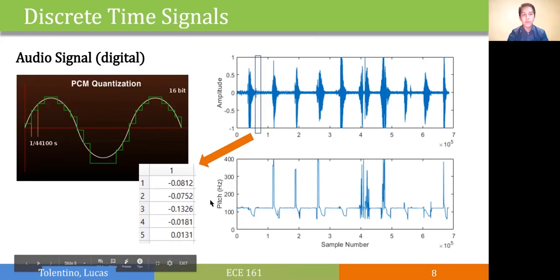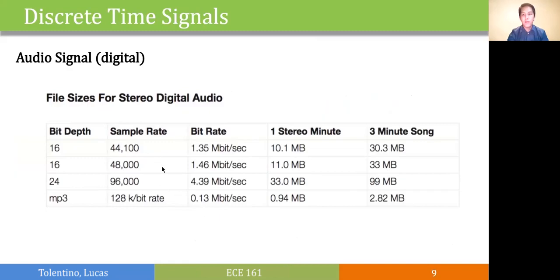Now, the sampling rate and the bit depth determine what we call the bit rate, and this is proportional to the file size. So for 16 bits and 44.1 kHz, we can achieve as high as 1.35 megabits per second, which would mean 30 MB for a 3-minute song.